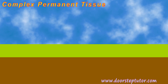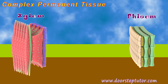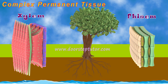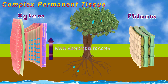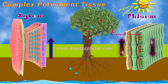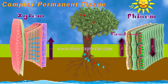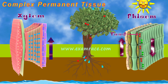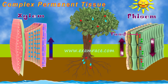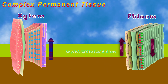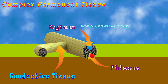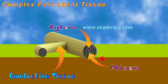Complex permanent tissues include xylem and phloem. Xylem takes water and minerals from the roots to the leaves. Phloem processes the food in the leaves and transports it to the other parts of the plant — you can remember phloem as 'full' since it transfers everything that is manufactured. Together, xylem and phloem are called conducting tissues because they conduct either water, minerals, or food.